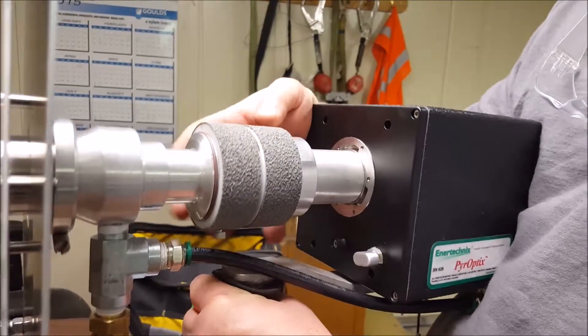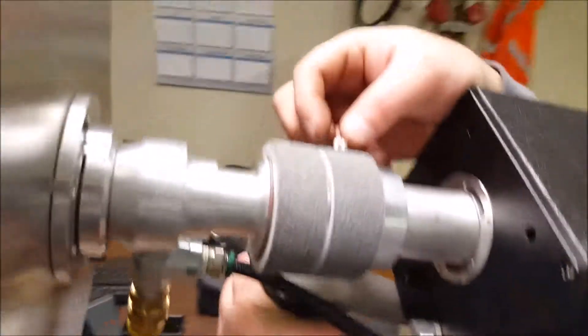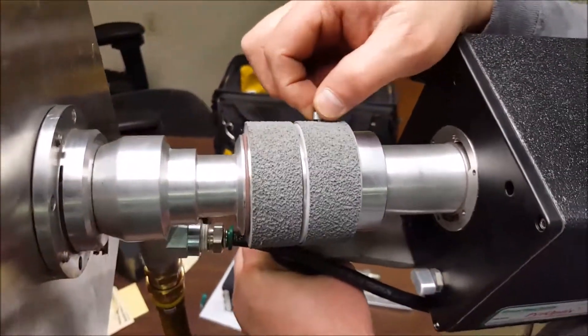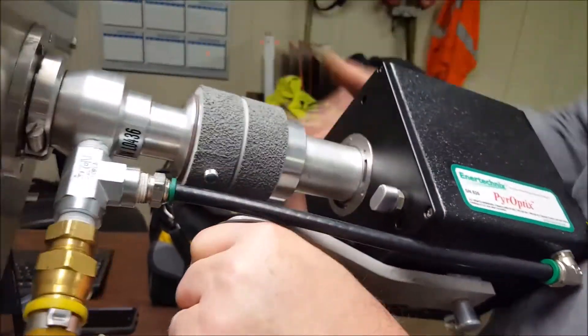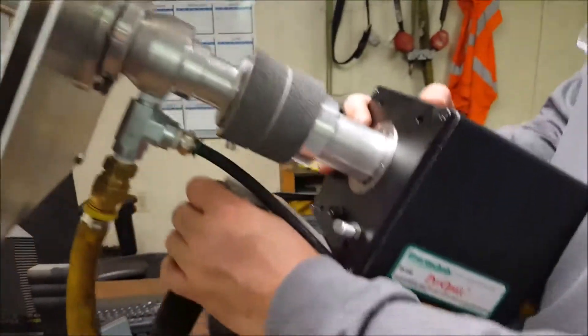If you get to a point where you have a good image, there's tightening thumb screws that you can tighten. Kind of hard to get to, but you can tighten them up and you're good to go.